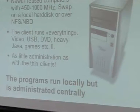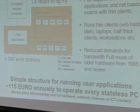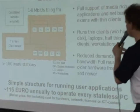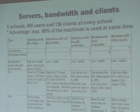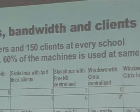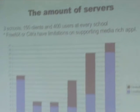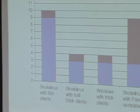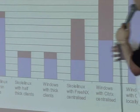This gives a simple structure for running user applications, and the cost to run this is 150 euros annually. We've done calculations from the municipality of Oslo with three schools as an example: 400 users, 150 clients at every school, with a maximum of 60% of machines in concurrent use. Looking at server counts: if you go for Citrix, you need a lot of servers — great for Fujitsu Siemens, HP, or Dell, but the School Linux effort is about saving money for schools. So we really recommend thick clients or half-thick clients — even with Windows.